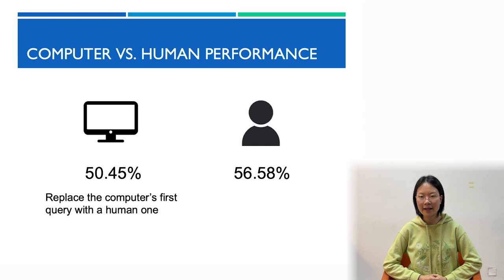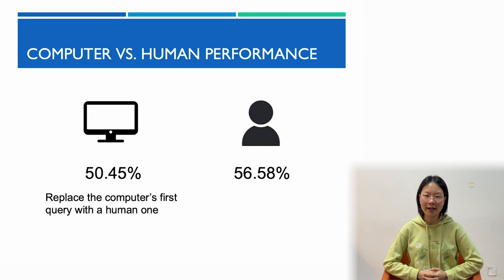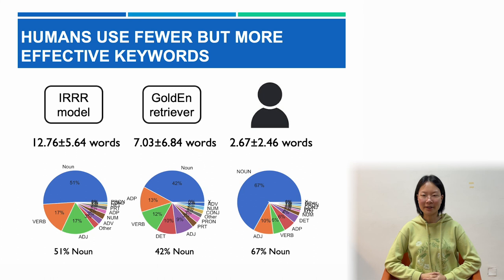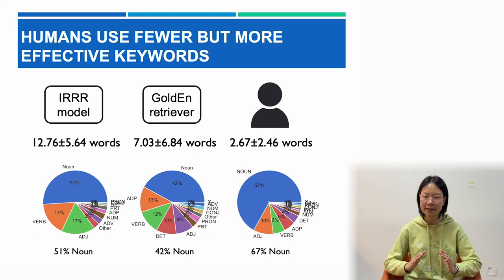This suggests that the models can benefit from human insights. So, at least for these quiz bowl questions, humans are different, and by some measures, better. Let's take a look at how they're different, and what that might tell us about the future of computer question answering. Humans use fewer but more effective keywords. Human queries are substantially shorter than computer queries, focus on proper nouns and short phrases, and tend to select the most specialized terms.